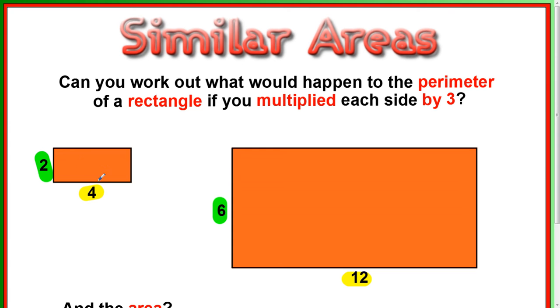So if you look at the perimeter of this, the perimeter is the distance all the way around. So 4, up 2, along 4, down 2. So 4 and 4 makes 8, 2 and 2 makes 4, so this is 12.